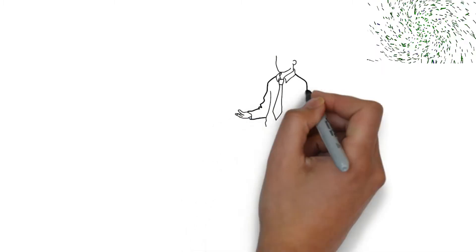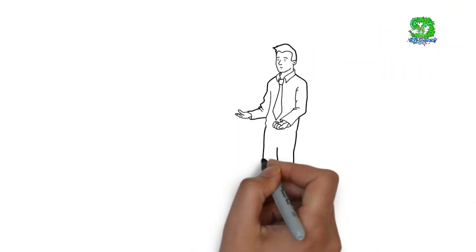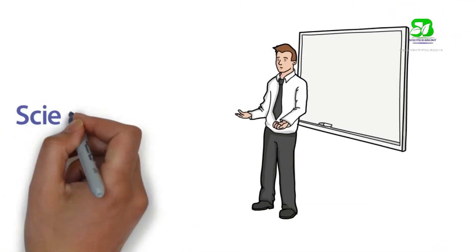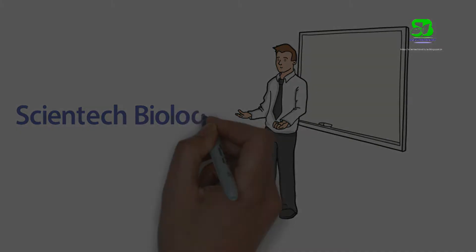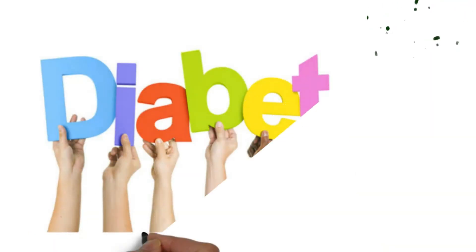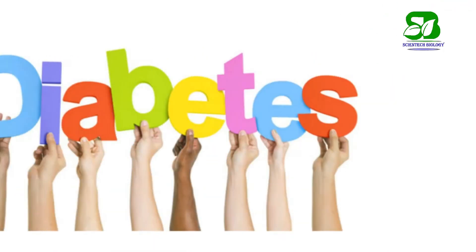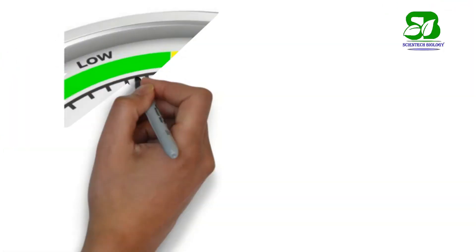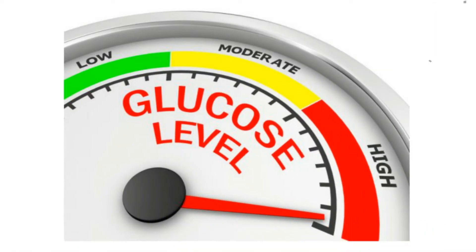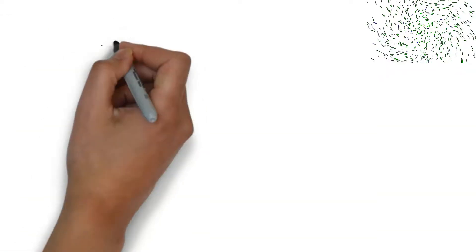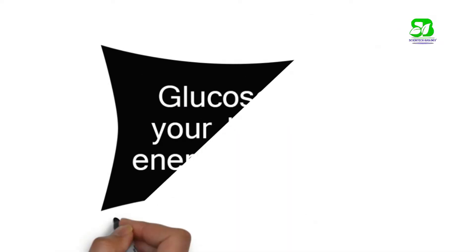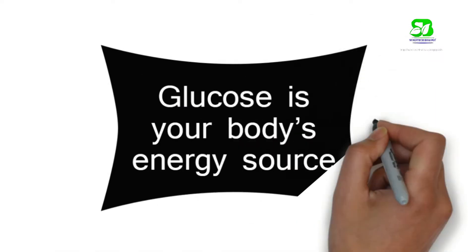Hi viewers, welcome back. Myself Satyendra and you are watching Scientech Biology. Diabetes is a disease that occurs when your blood glucose, also called blood sugar, is too high. Blood glucose is the main source of energy that comes from the food you eat.